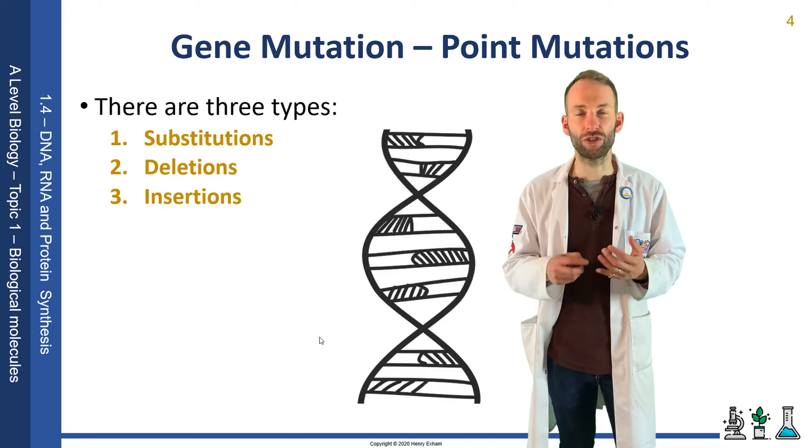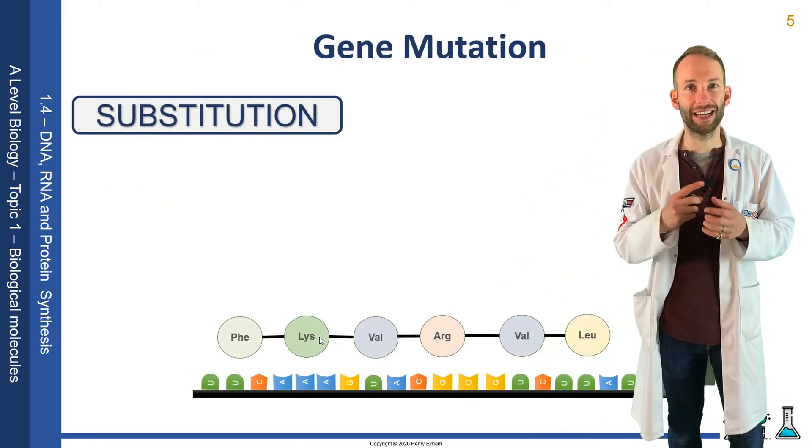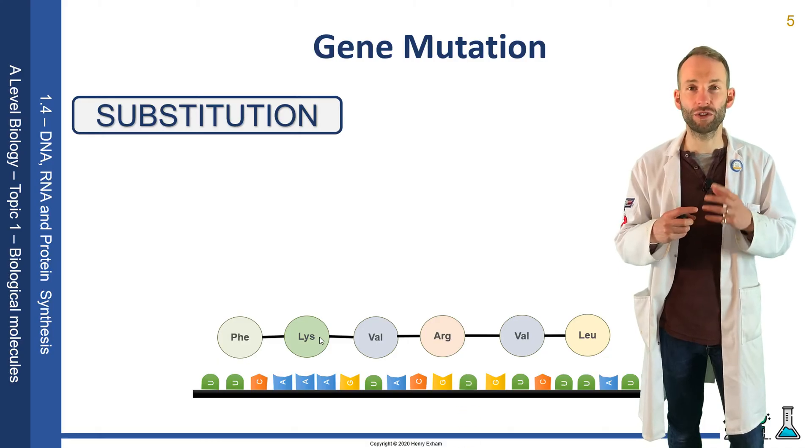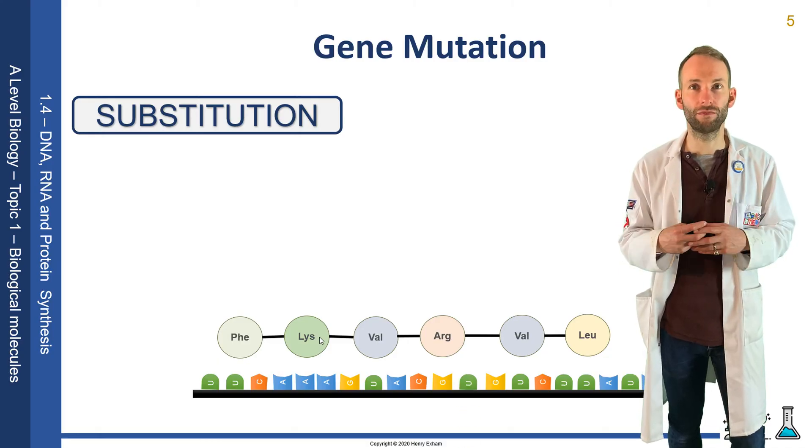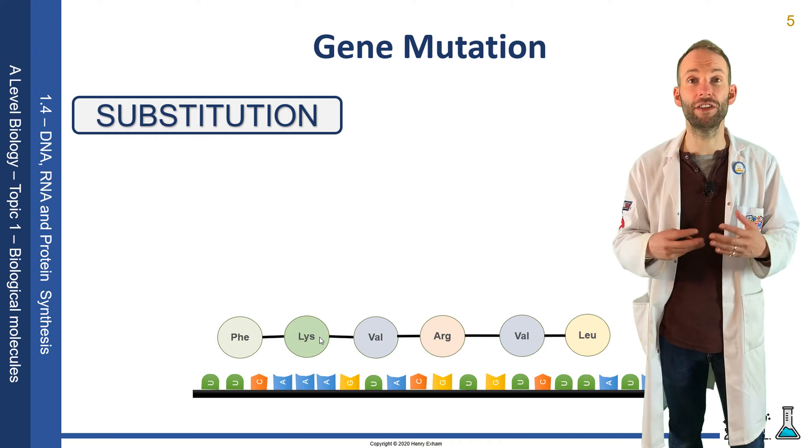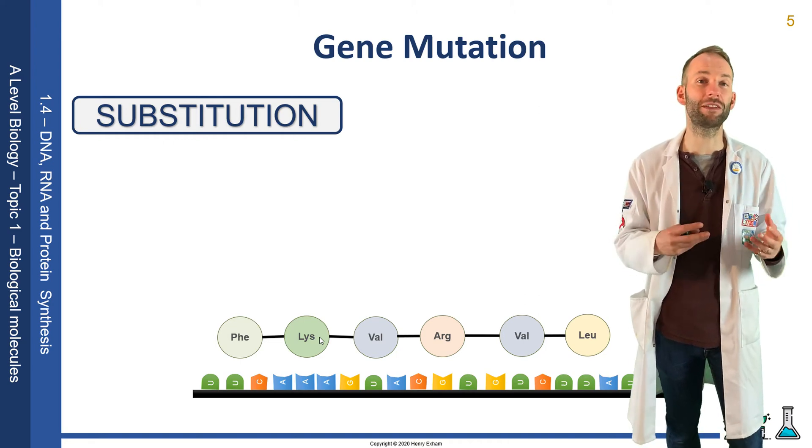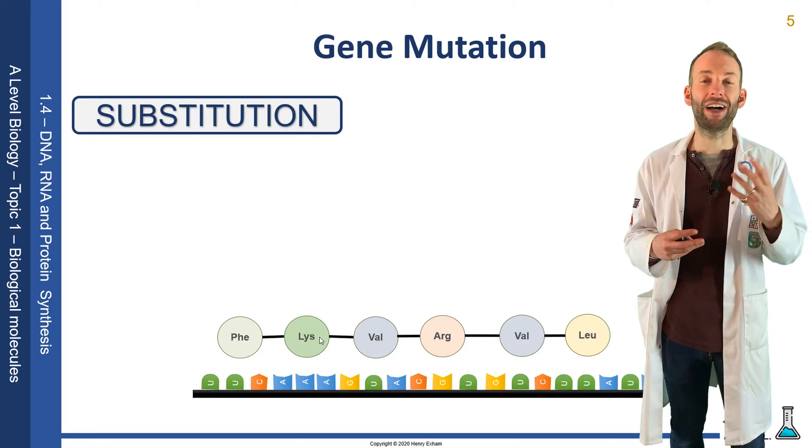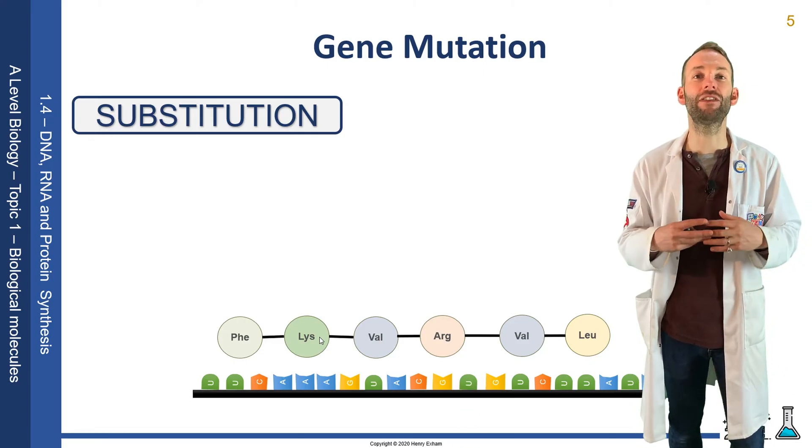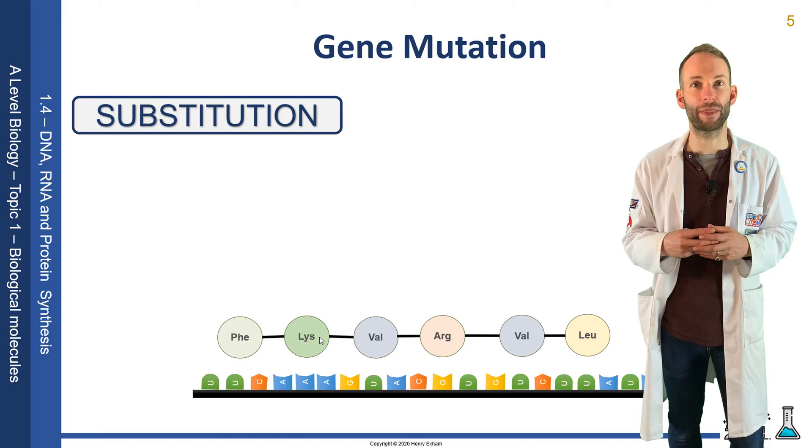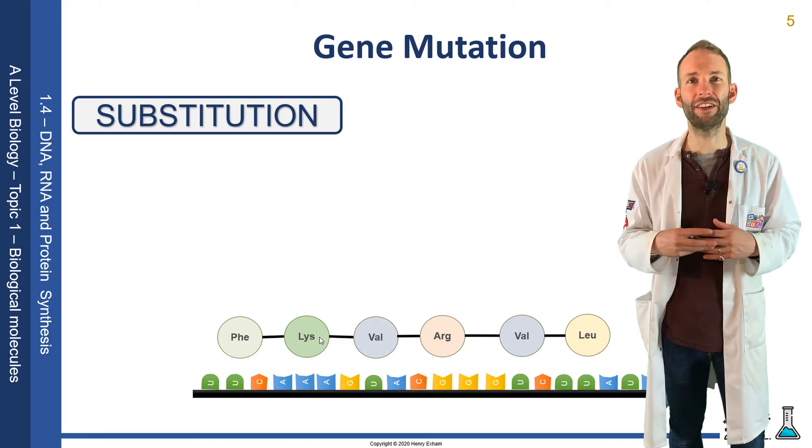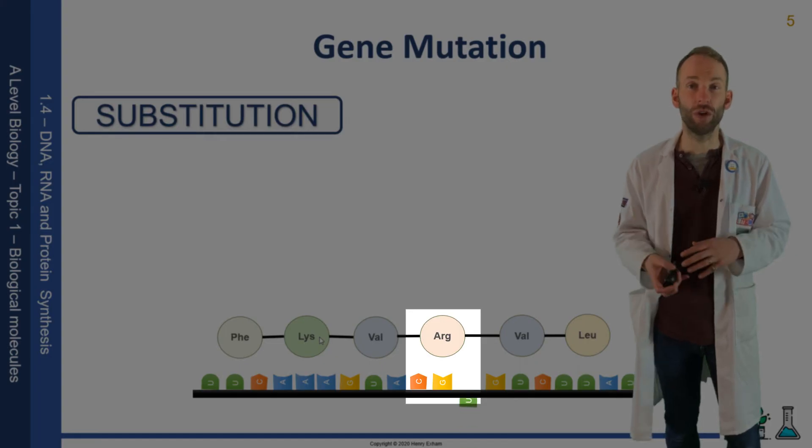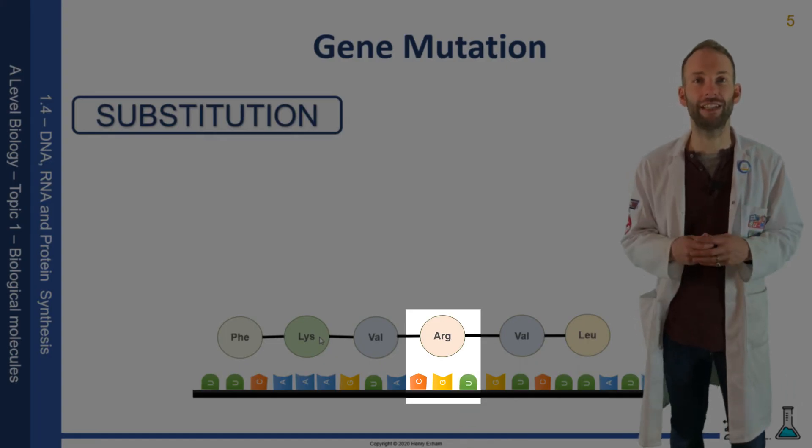In a substitution, one base is changed for another. It's not necessarily that serious as it can only alter a maximum of one amino acid. Bearing in mind the degenerate code—that there are 64 combinations for only 20 amino acids—one change in a base might not actually change the amino acid, so it's going to have a pretty small effect. In the example here there is no effect as CGG and CGU both code for arginine.